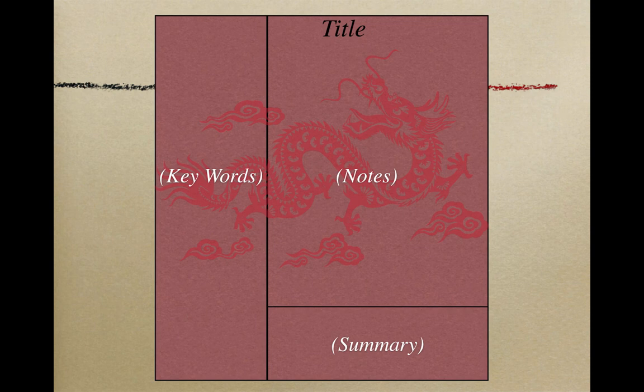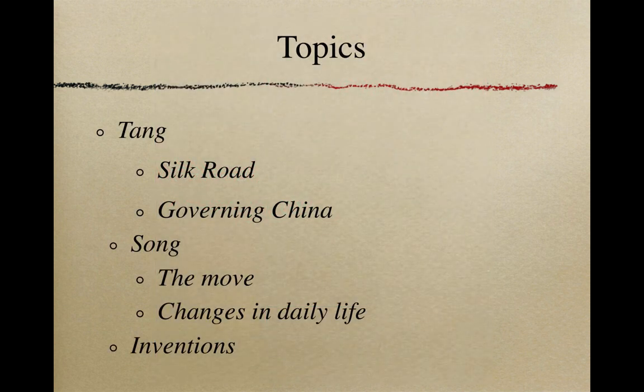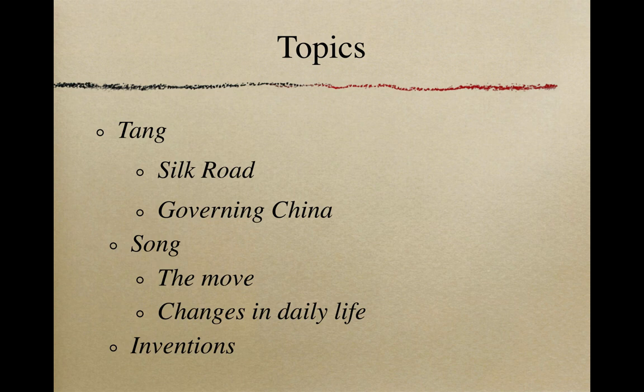Let's set up our paper so we can take notes correctly using the Cornell note format. Our topics are going to cover the Tang and Song dynasty — over 600 years of Chinese history. We're going to talk about the Silk Road and how they governed China. We'll also talk about how the government had to shift southward, how life changed for the people in China, and the inventions that were created during that 600-year period and how those inventions spread around the world.